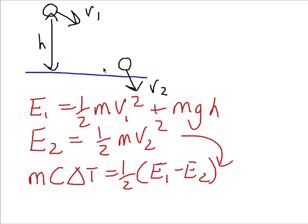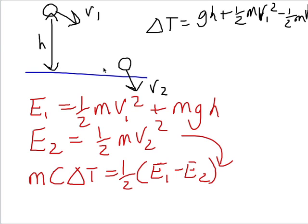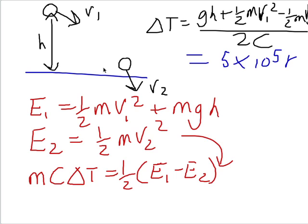This turns out, if you rearrange it, to give us delta T equals gH plus half mv1 squared minus half mv2 squared, all divided by 2 times the specific heat capacity, which gives us a temperature change of about 5 × 10^5 Kelvin — half a million degrees.